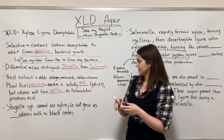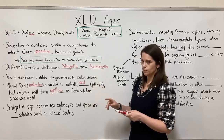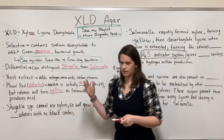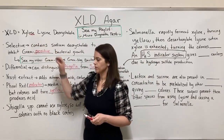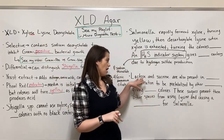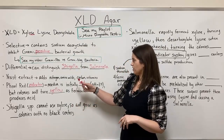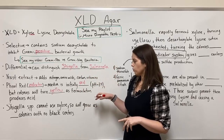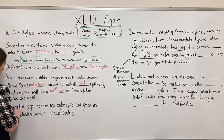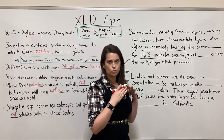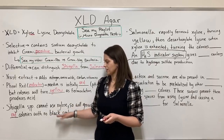Now let's talk about Shigella and Salmonella, the two organisms we use XLD Agar to distinguish. Shigella species cannot use xylose, and they also cannot use lactose and sucrose very well. Because they can't ferment the xylose that Salmonella can, they will grow as red colonies on XLD media with no black centers — just plain red colonies.